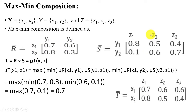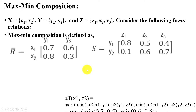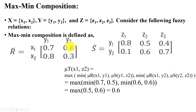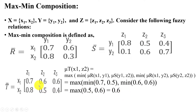Now we calculate the first row with the second column: T(x1,z2). Maximum of: min(R(x1,y1), S(y1,z2)) = min(0.7, 0.5) = 0.5, and min(R(x1,y2), S(y2,z2)) = min(0.6, 0.6) = 0.6. The maximum of {0.5, 0.6} is 0.6. So T(x1,z2) = 0.6, entered into the matrix.